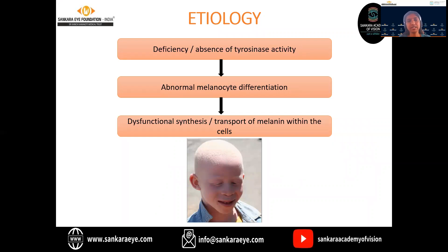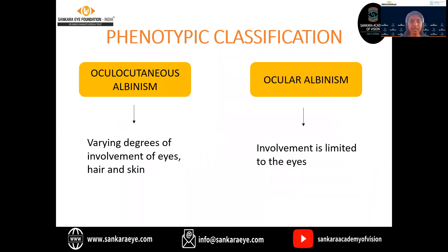The causative is mainly the deficiency or the absence of tyrosinase activity, abnormal melanocyte differentiation, or any dysfunctional synthesis or transport of melanin within the cells. All these things can lead to this inherited condition. Phenotypically, it is divided into two types: the oculocutaneous albinism and the ocular albinism. Oculocutaneous albinism involves varying degrees of involvement of the eyes, hair, and the skin. In ocular albinism, the involvement is limited to the eyes alone.